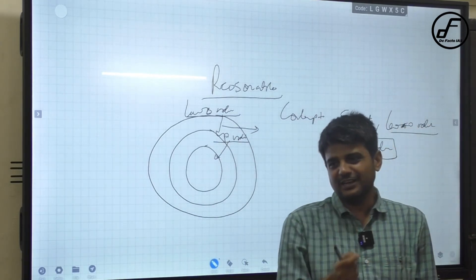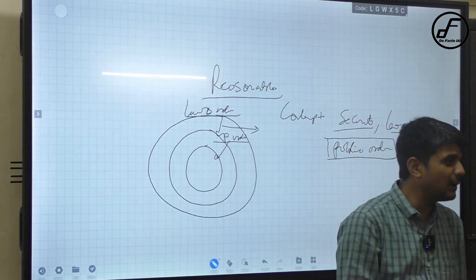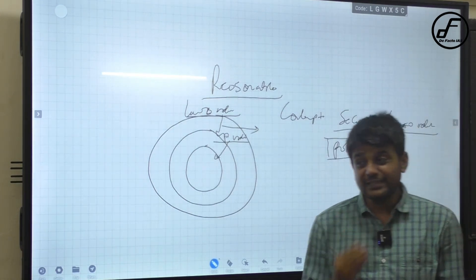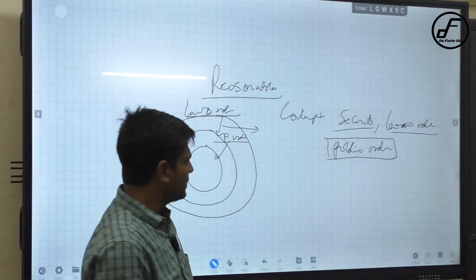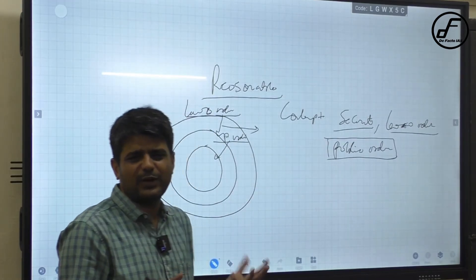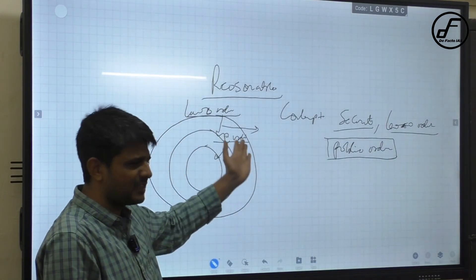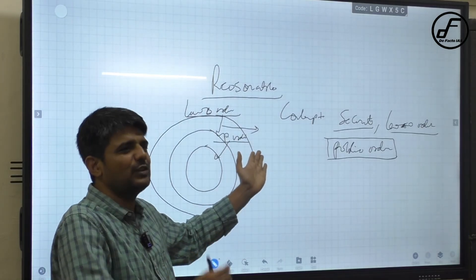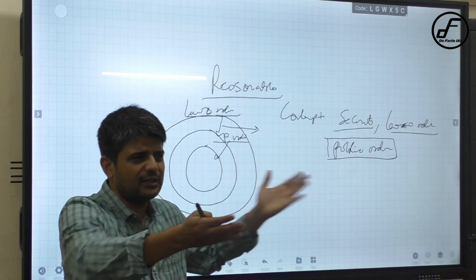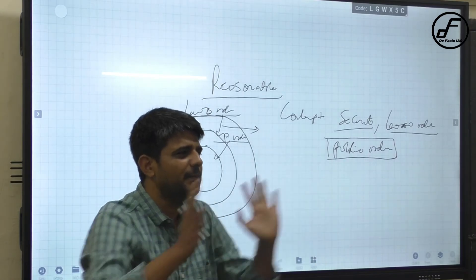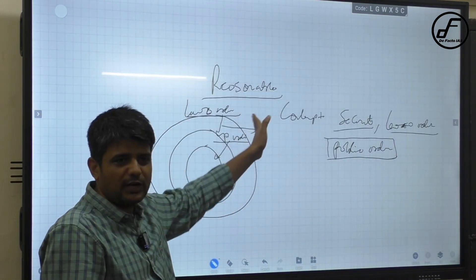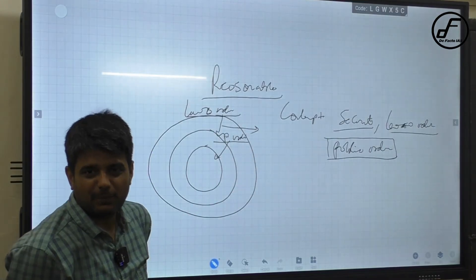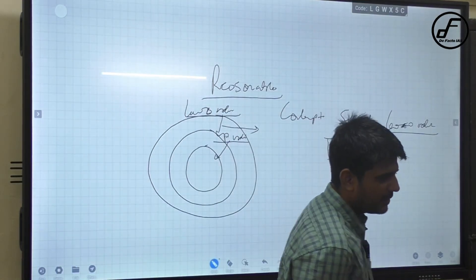Who will decide whether it is violating law and order and public order? The court will decide. The security of the state is not much of relevance, because anyway once the restriction is based on public order, even though the security of state is not violated, the consequence will remain the same. So the main difference that matters is between law and order and public order.